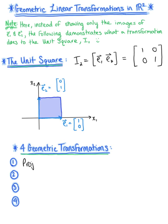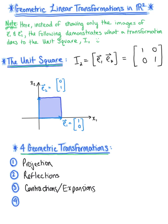The four geometric transformations we will explore are: first, projections — projecting the unit square onto one of the axes; second, reflections — reflecting the unit square across one of the axes or a diagonal line; third, contractions and expansions — shrinking and stretching the unit square; and last, shearing.